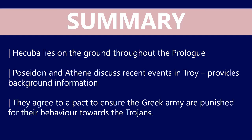To give you a quick summary of the prologue: initially Hecuba, the queen of Troy, lies on the ground throughout — that's mentioned in the stage directions. Poseidon and Athena, a god and a goddess, discuss recent events in Troy and provide us with some background information. This is of course the role of the prologue — to introduce the audience to the setting and events that have preceded what is about to appear on stage. Poseidon and Athena agree to a pact to ensure the Greek army is punished for their behavior towards the Trojans.